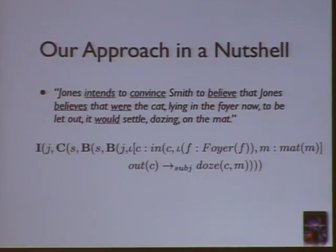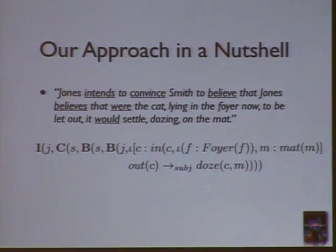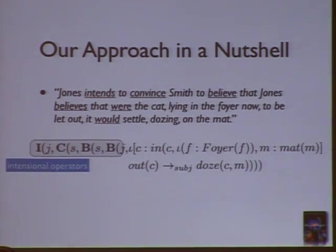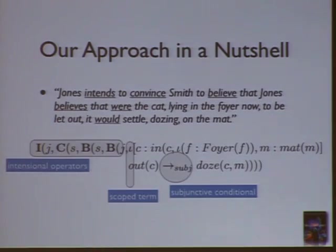Finally, come to an example. If you have a sentence like 'Jones intends to convince Smith to believe that we're the cat... mine... and that' — I'm sure most of you can understand this sentence. It's really complicated, but if you read it over a couple of times, you can form some representation in your head of what it means. We would formalize it using intentional operators: I is 'intends,' C is 'convince,' B is 'believes.' You have a scoped term and a subjunctive conditional. This is how we'd represent it in the language we've been using.